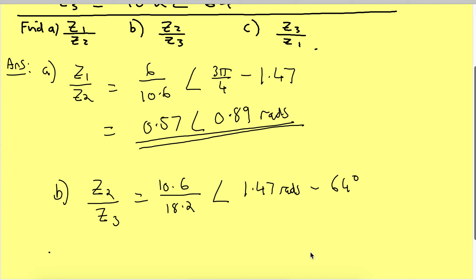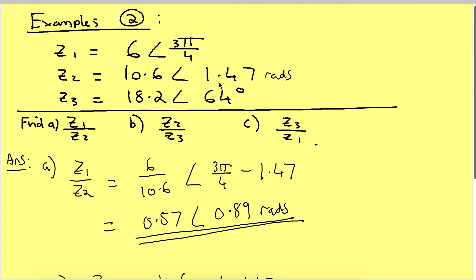Now that can't happen. I can't do this because one's in radians and one's in degrees. As I said, we like to work in radians from now on in our maths because they're a better and more accurate measure. So I have to convert this number into radians. Remember, to do that you divide by 180 and you multiply by pi, which gives me 16π/45.